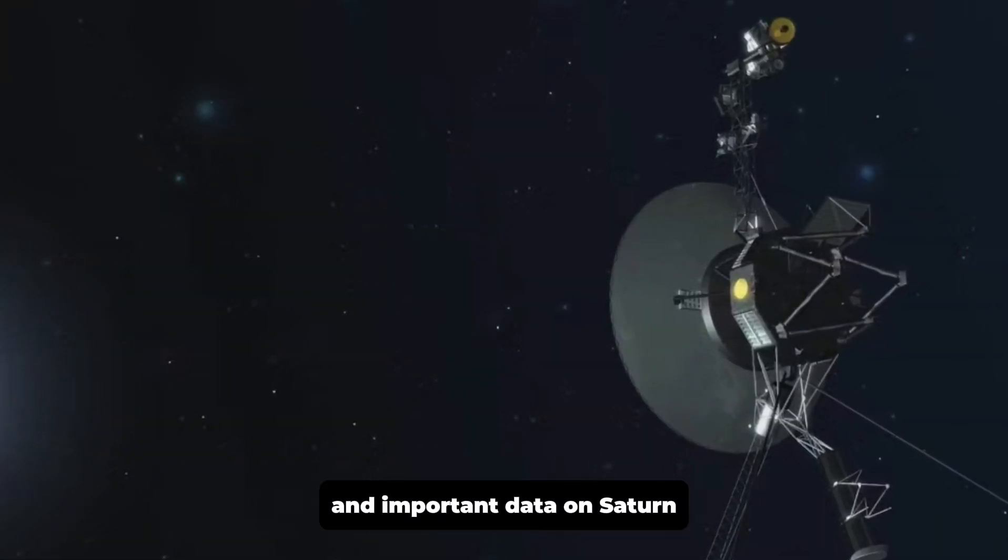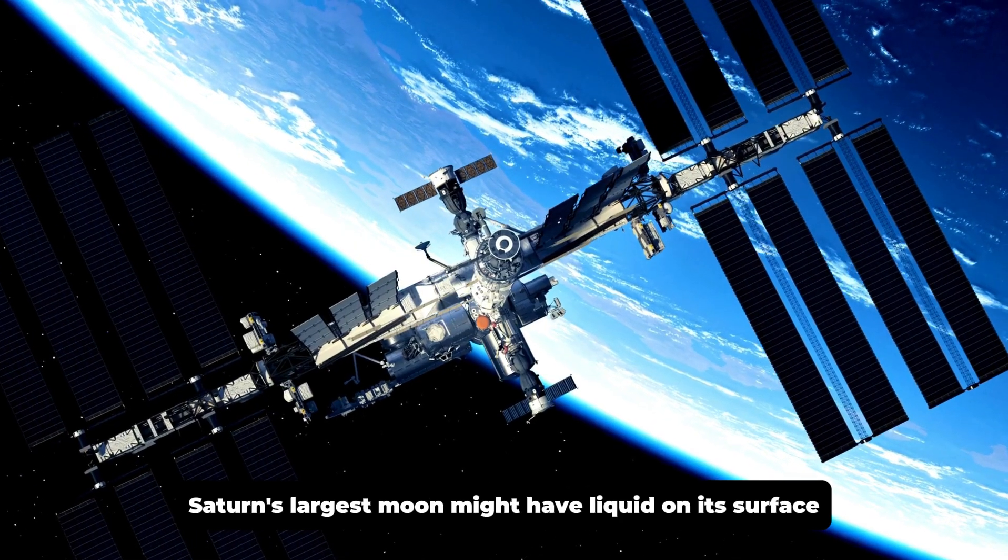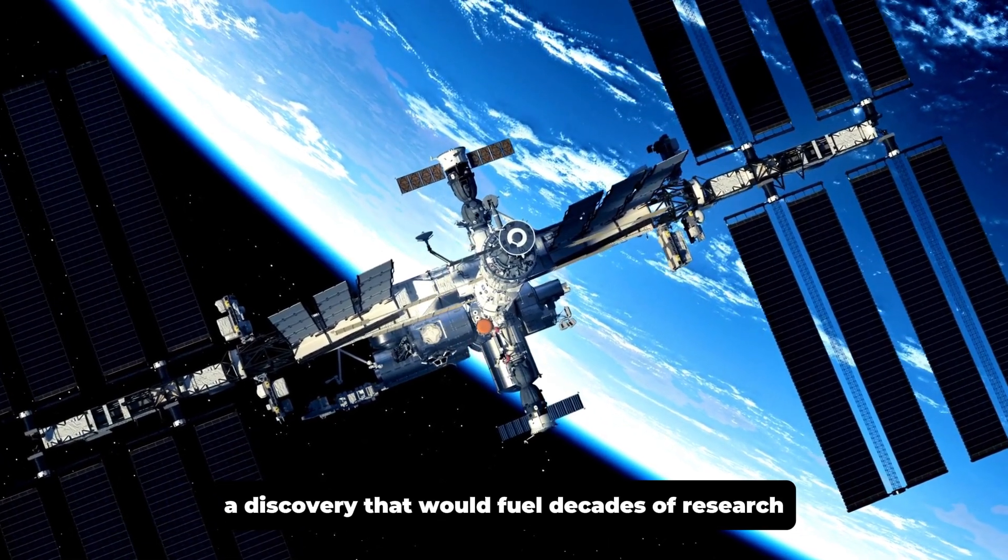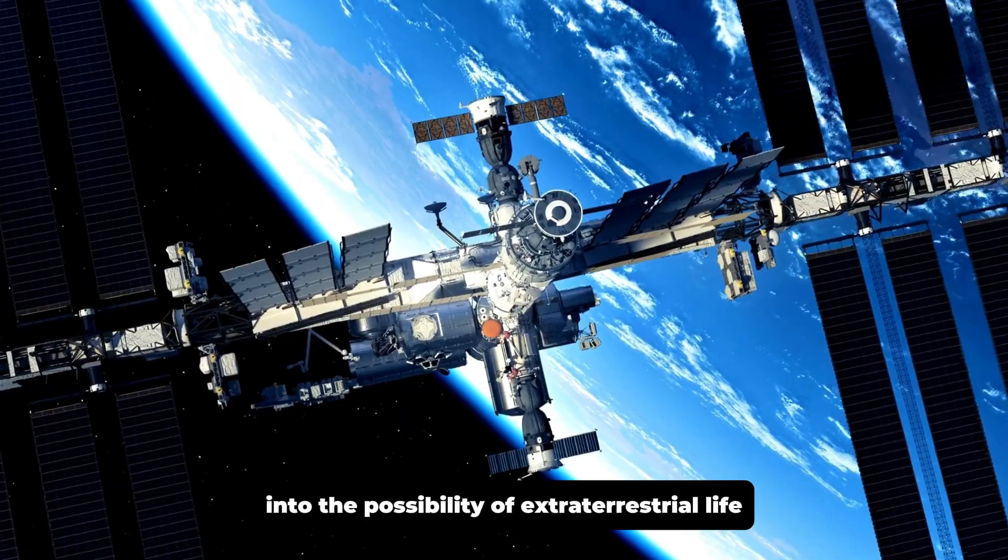Voyager 1 also provided stunning images and important data on Saturn, including evidence that Titan, Saturn's largest moon, might have liquid on its surface, a discovery that would fuel decades of research into the possibility of extraterrestrial life.